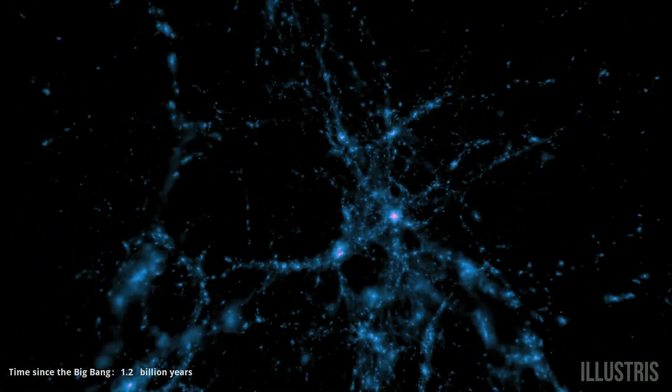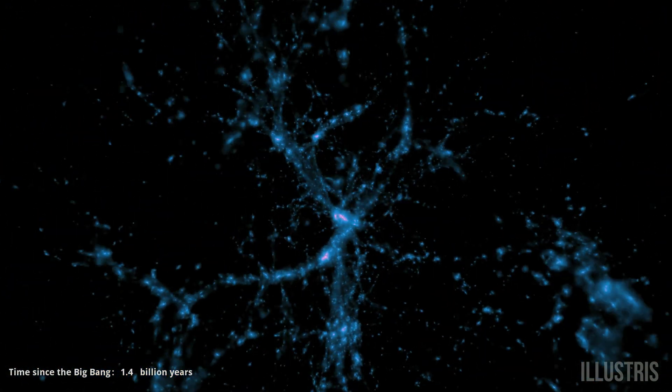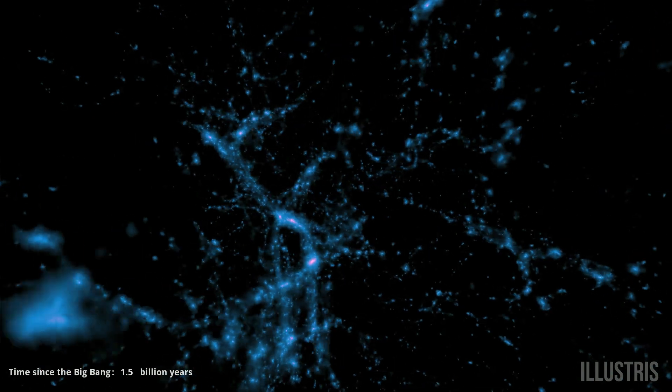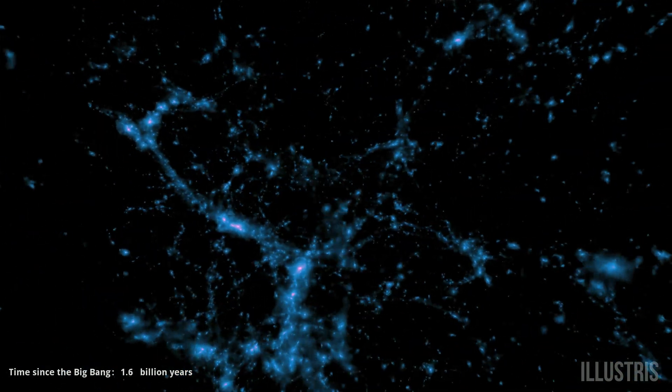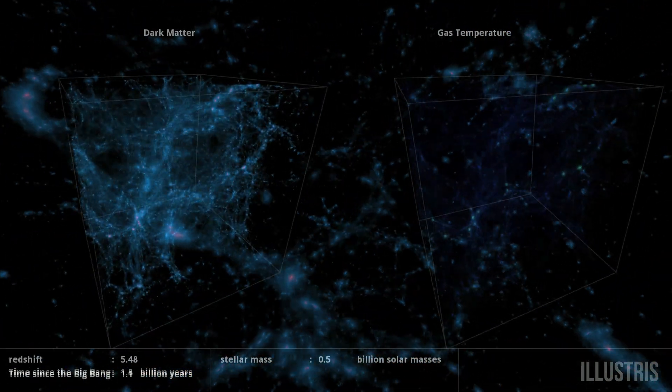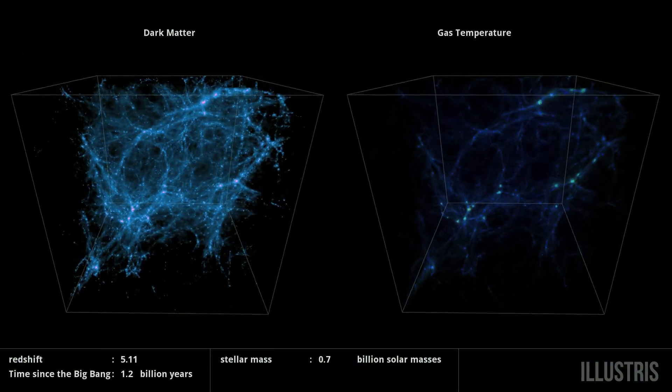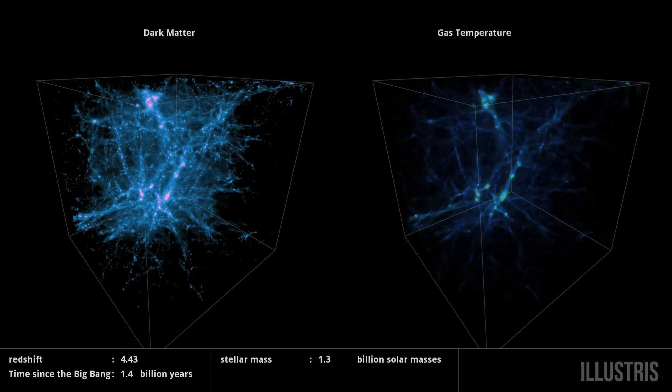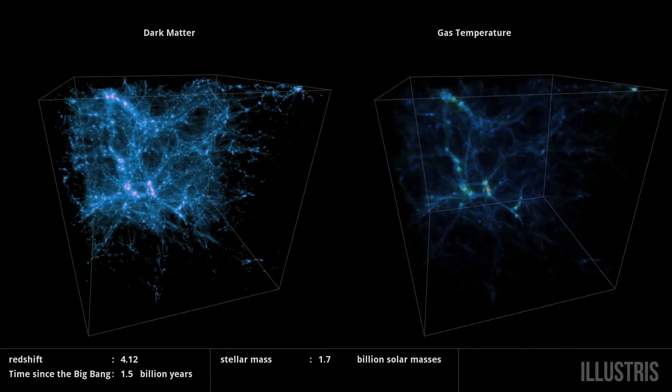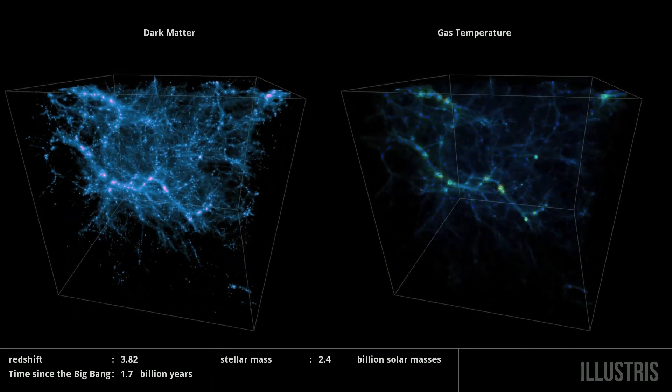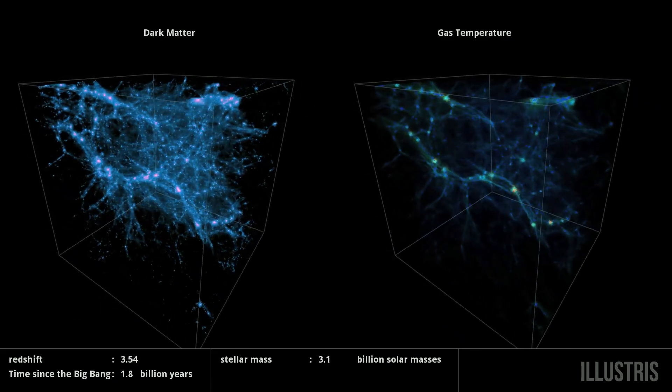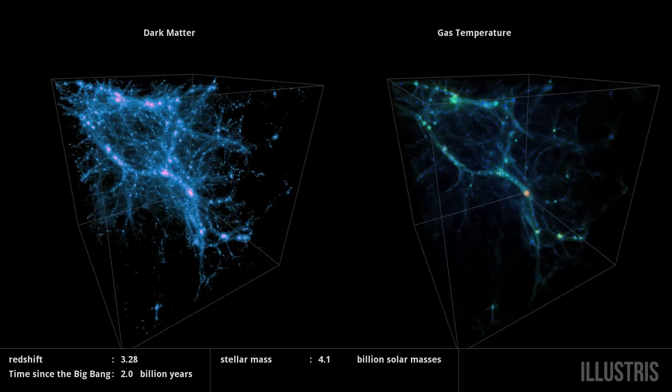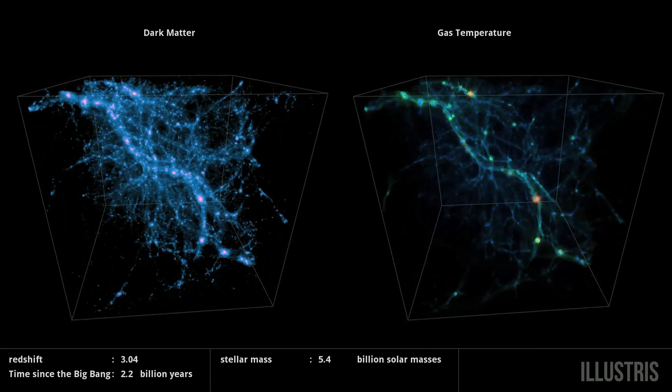Not everything is known, including the nature of a dominant substance known as dark matter. On the left, you can see how gravity draws dark matter into filaments, like a spider's web. On the right, gas heats up as it falls into a series of deepening gravitational wells carved out by dark matter.